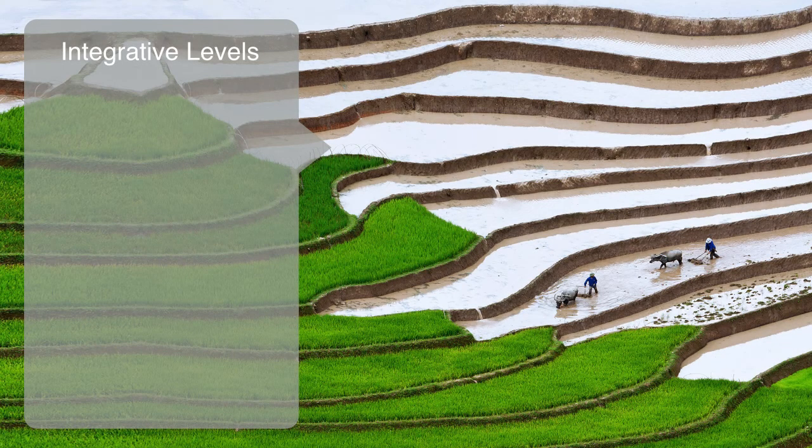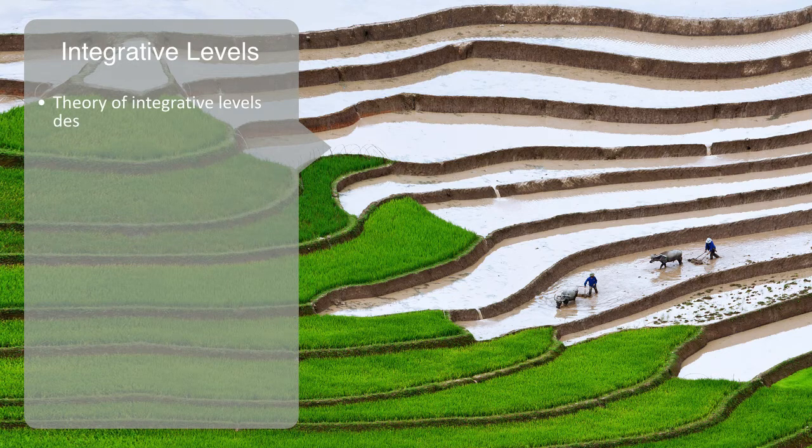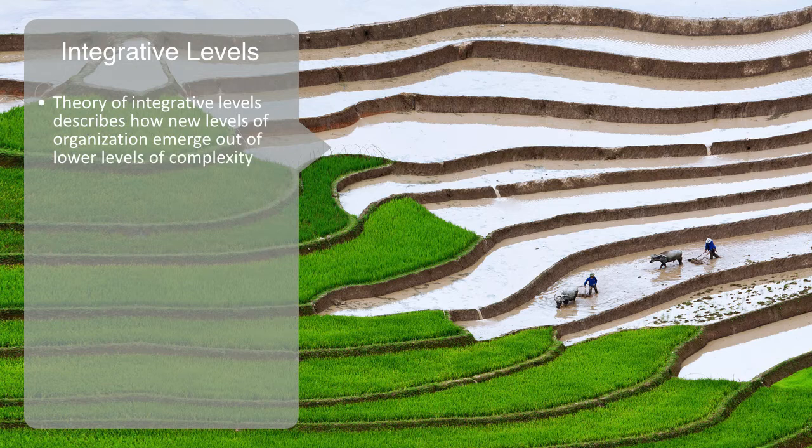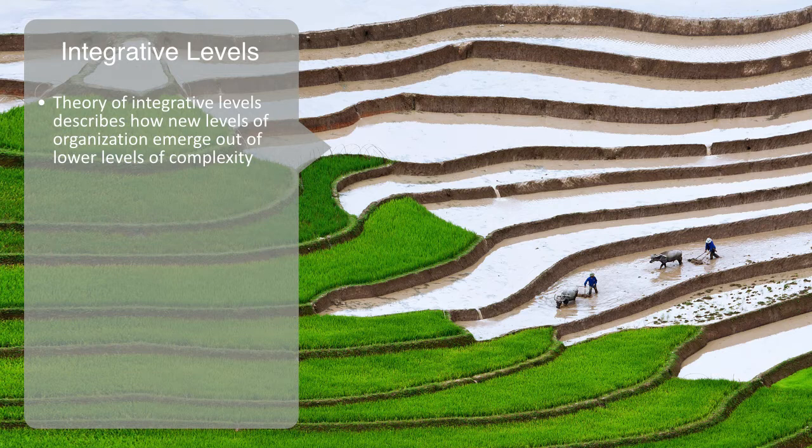Emergence gives rise to new levels of organization, what are called integrative levels. The theory of integrative levels describes how new levels of organization emerge out of lower levels of complexity. To understand the relevance of this to technology, we might think about how we needed to have the agricultural revolution, before we could have the industrial revolution, and in turn, needed to have both of these before we could have the information revolution.